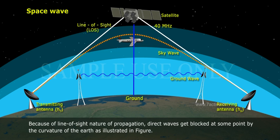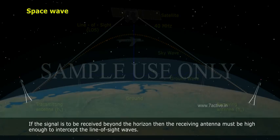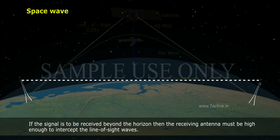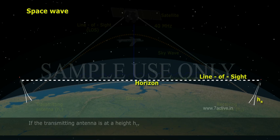Because of line-of-sight nature of propagation, direct waves get blocked at some point by the curvature of the earth, as illustrated in figure. If the signal is to be received beyond the horizon, then the receiving antenna must be high enough to intercept the line-of-sight waves.